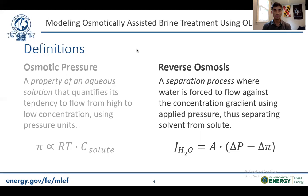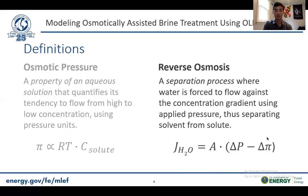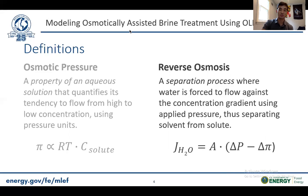We have a governing equation below that shows that J_H2O — the amount of product water — increases as we apply more hydraulic pressure, ΔP, and decreases as we have more salt and thus Δπ. As you might be able to tell from those definitions, ΔP is the driving force and Δπ determines how difficult the process will be.